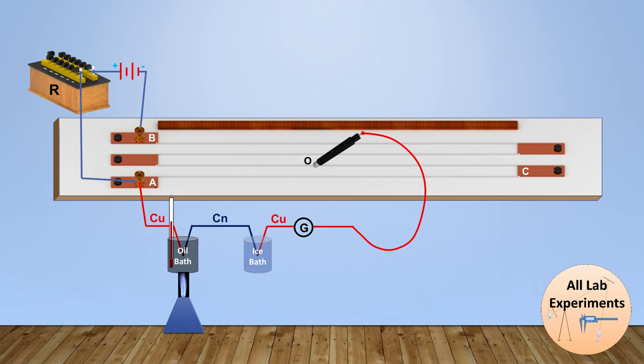Now place the jockey on the potentiometer wire and try to find out the neutral point. Neutral point is the point where galvanometer doesn't show any reading. But to find your stable point on this potentiometer, you need to apply an appropriate resistance R in this resistance box.